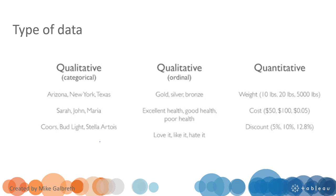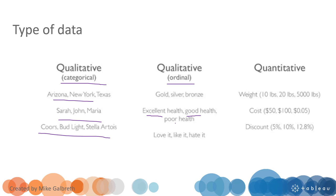There are some different types of data that we can use pre-attentive visual attributes to visualize. When talking about different types of data, we have categorical data — data in different classes — and ordinal data, which means there is an order in the data, like first, second, third, higher, lower, etc.